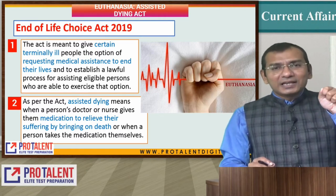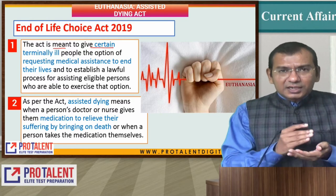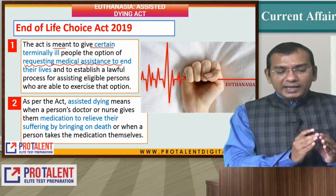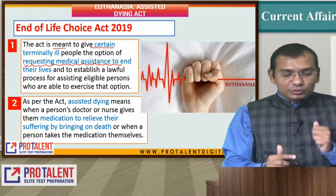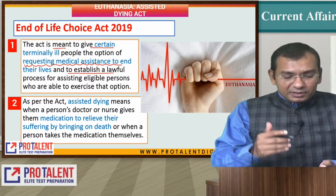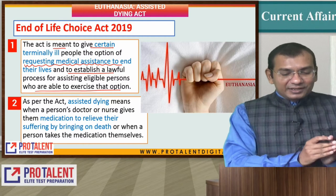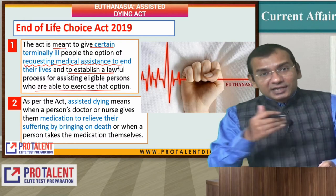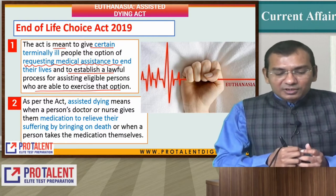The End of Life Choice Act 2019 is meant to give certain terminally ill people the option of requesting medical assistance to end their lives, and to establish a lawful process for assisting eligible people who are able to exercise that option. This is an option available to terminally ill people — they can, on their request, seek medical assistance.